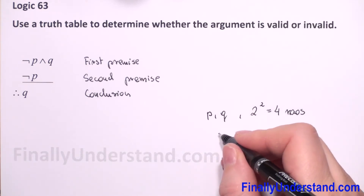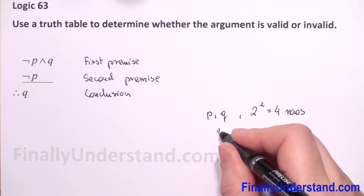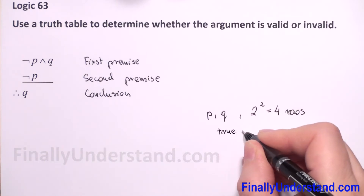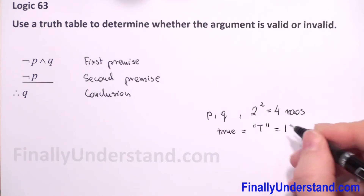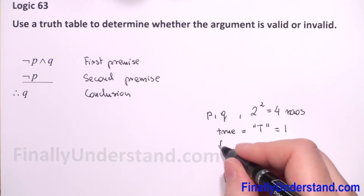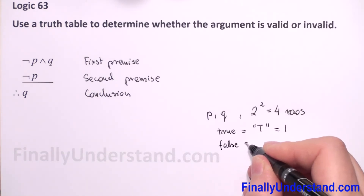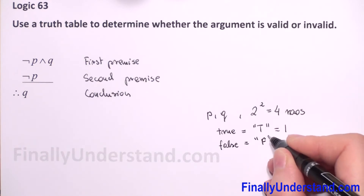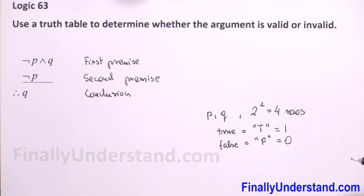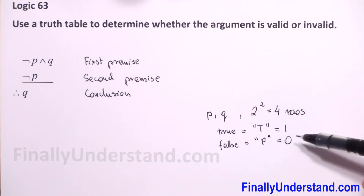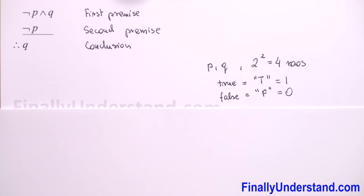When we have true we will use the letter T or 1, and when we have false we will use the letter F or 0. I like to use 1 and 0. In some books you can find T and F.